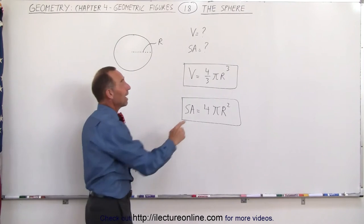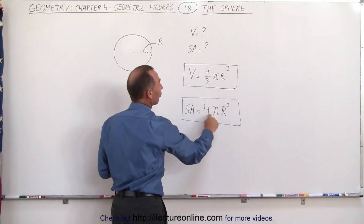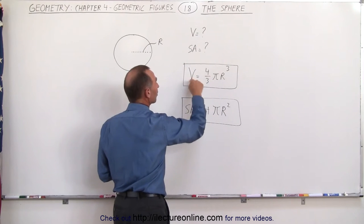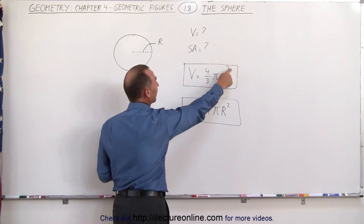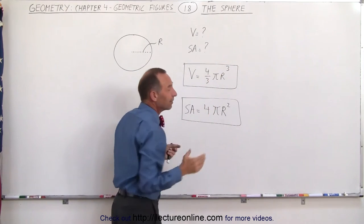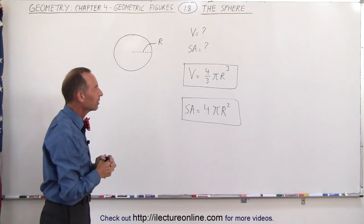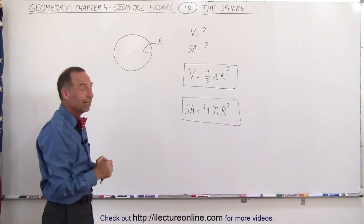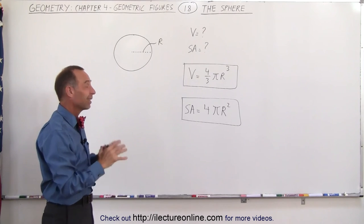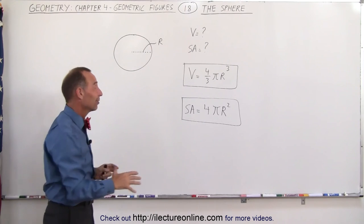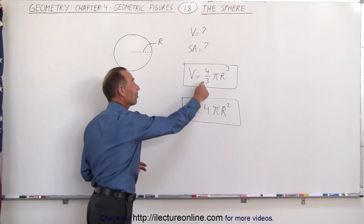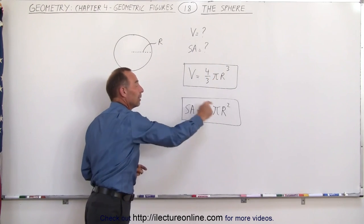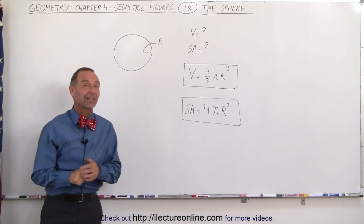Notice you have 4 pi r cubed, 4 pi r squared. The only thing is with the volume, it's divided by 3. Think of this exponent here coming down here, and there's some truth to that when we use calculus, but at least at this point that would be sufficient to remember. If you can remember those two equations, it'll help you down the road a lot so that you don't forget what these constants are in front of the pi r cubed and the pi r squared.